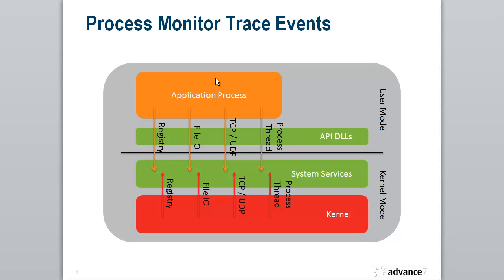An application process makes calls to the registry, it makes file I/O type calls, calls via the Winsock interface for TCP and UDP traffic, and also calls to the operating system to create and destroy processes and threads. All of those events are visible in a Process Monitor trace.